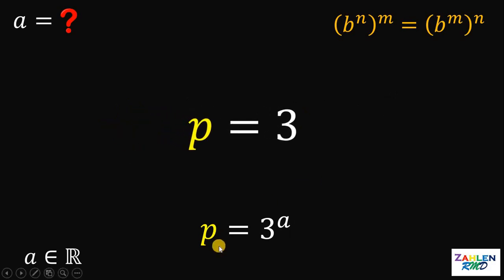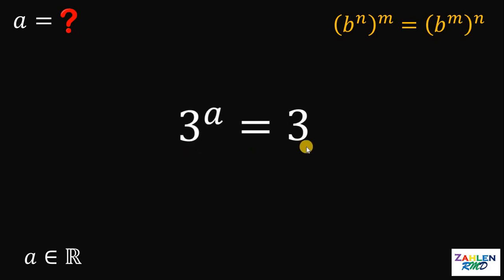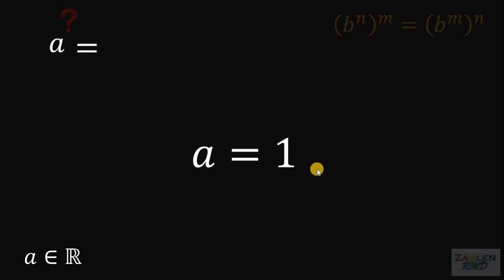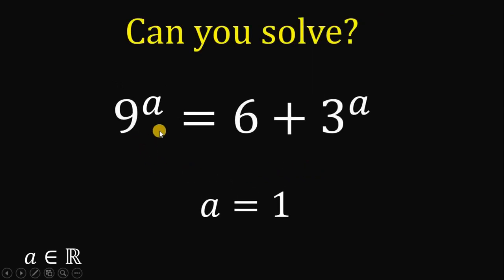Since p equals 3 raised to a, we can say that 3 raised to a equals 3. We know that this 3 has an exponent of 1. Since we have the same base, their exponent must be the same. Thus, we can say that a must be 1. Therefore, given this equation, 9 raised to a equals 6 plus 3 raised to a, the value of a must be equal to 1. And as always, we are done.